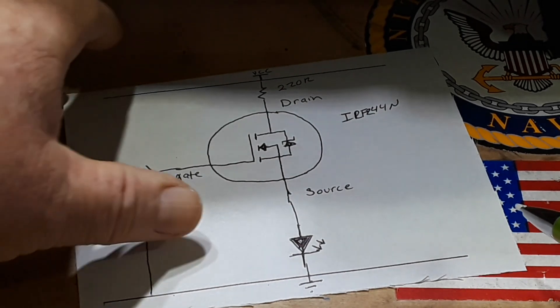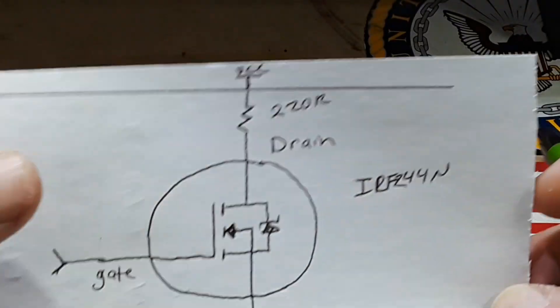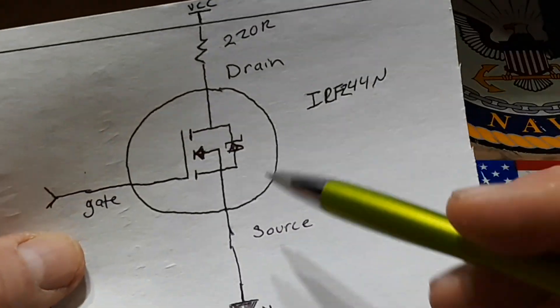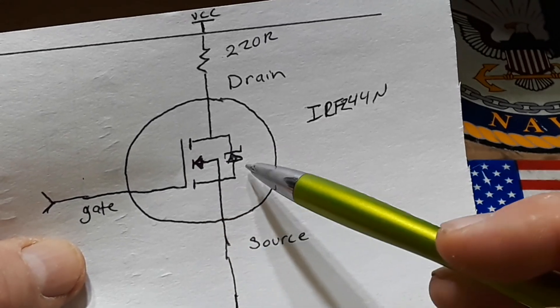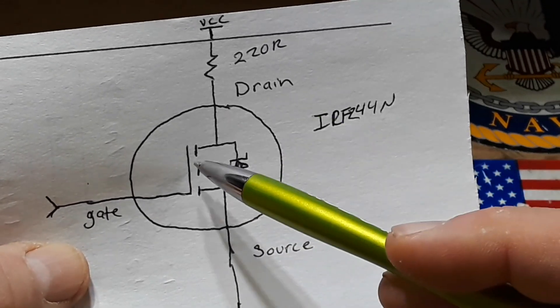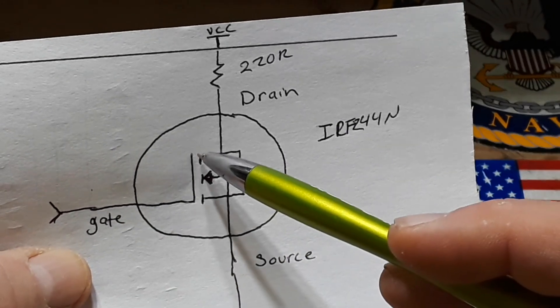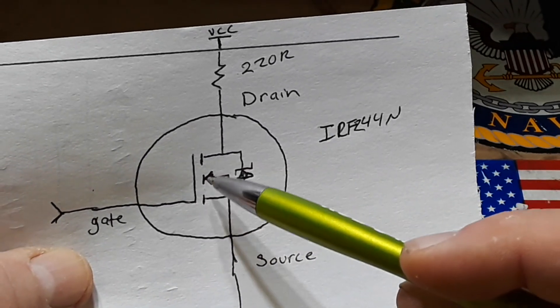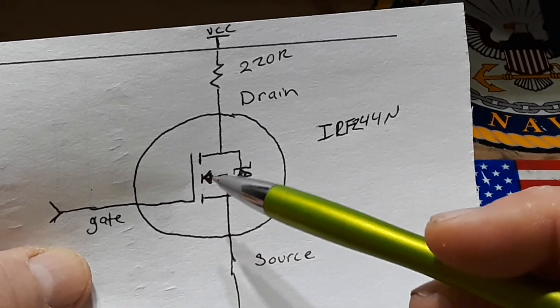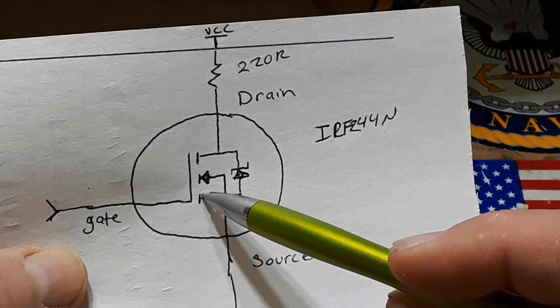So how does that work? Well it works right here. Here's your MOSFET, the interior part of your MOSFET, there's your body diode, and here is the gate which is insulated from the drain and source. It is capacitively coupled here.